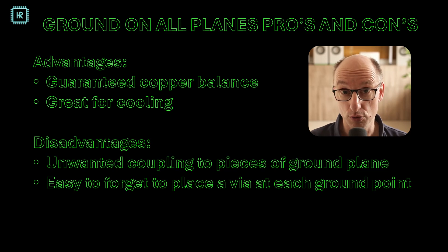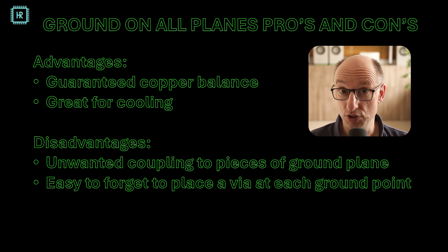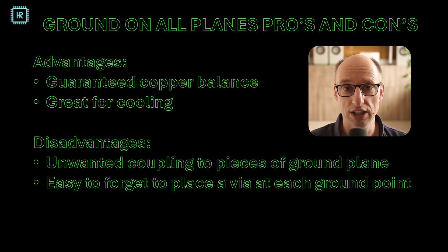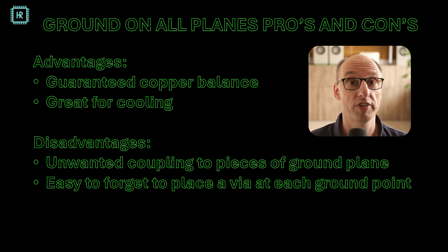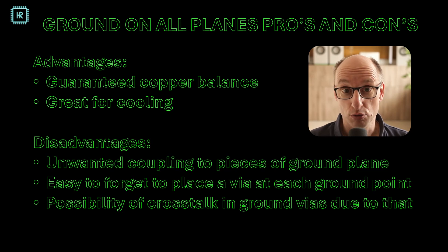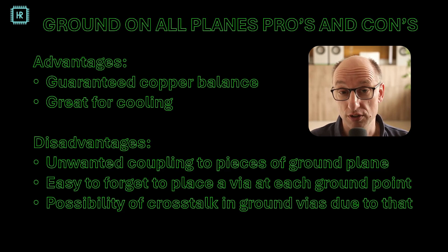However, for good RF performance, you must have a via at each ground connection. Now, if you have a single ground plane, your editor software will warn you that there's a loose connection. But with ground on all layers, it will not warn you — I also have a strategy for that. And there's a possibility of crosstalk because of this: if you don't place all the vias, then there will be some crosstalk.